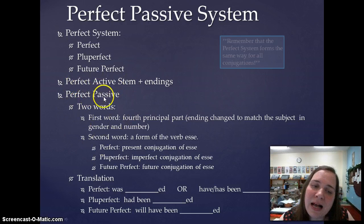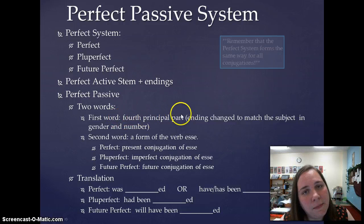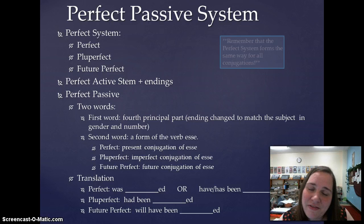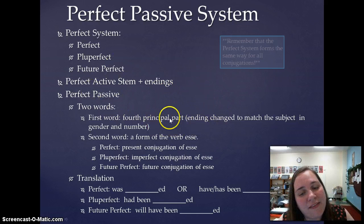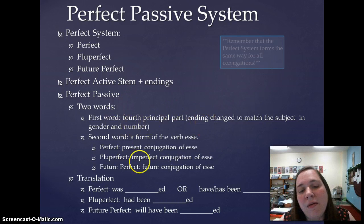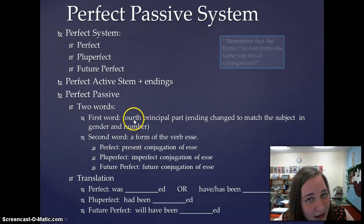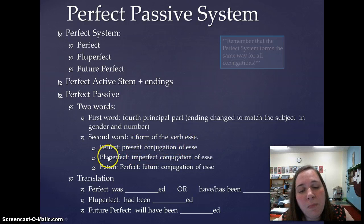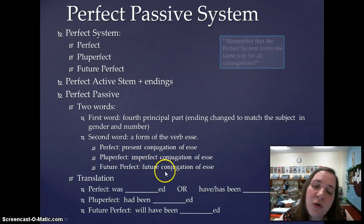The perfect passive indicative for the perfect, pluperfect, and future perfect is two words. The first word is the fourth principal part with the ending changed to match the gender and number of the subject. So if the subject is feminine plural, the ending on the fourth principal part would be -ae. For our example verb amo, amare, amavi, amatum, that would mean the ending would be amatae. The second word is a form of the verb 'to be': perfect passive uses a present conjugation of esse, pluperfect uses the imperfect conjugation of esse, and future perfect passive uses the future conjugation of esse.